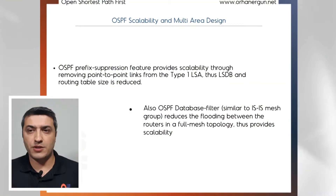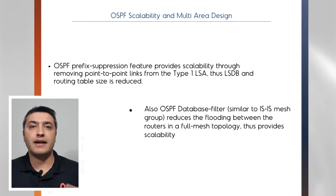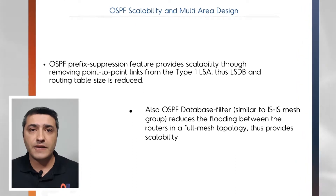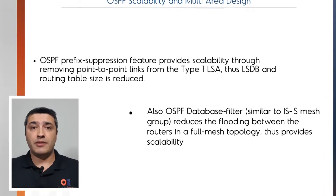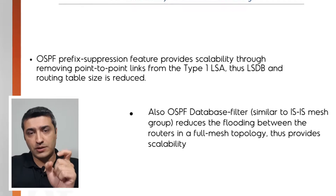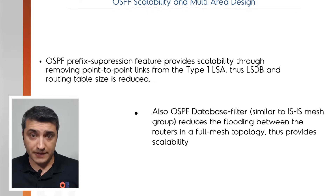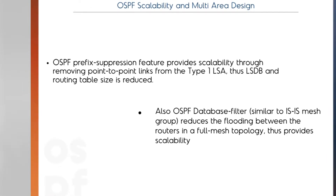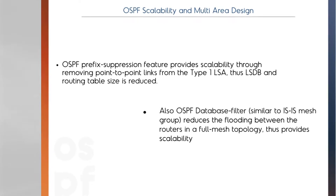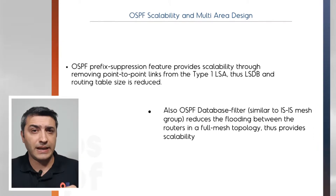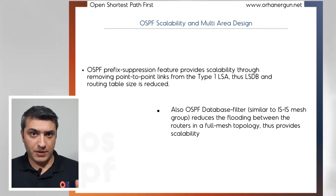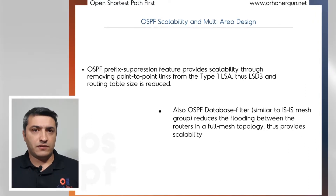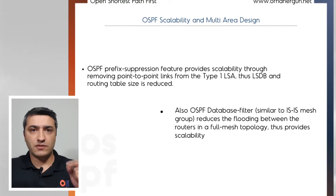In router LSA — Type 1 LSA — each and every router in an OSPF area creates a Type 1 LSA and identifies their connected prefixes, their neighbors, and the OSPF metric between neighbors. This information is sent not only for point-to-point links between two routers, but also for loopback and any other stub subnet. For the SPF algorithm, we don't actually need this IP information of the point-to-point link — it could just be unnumbered — and OSPF can still calculate the topology.